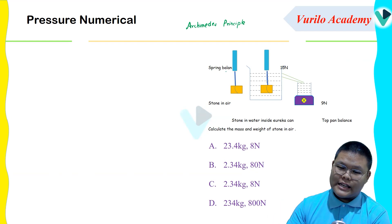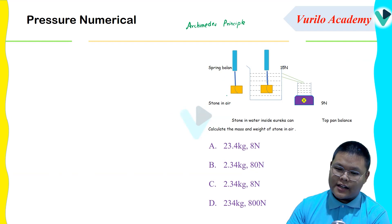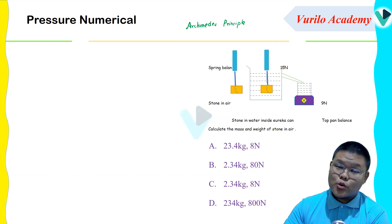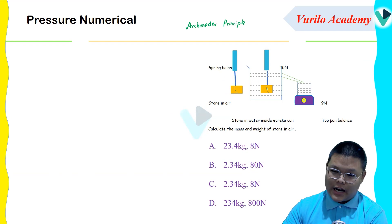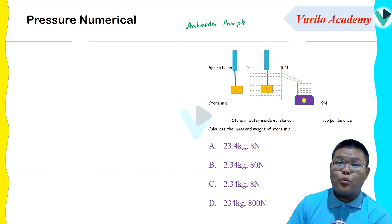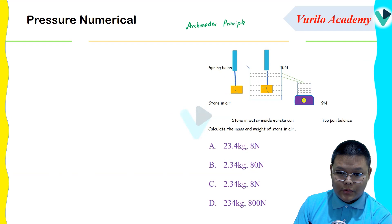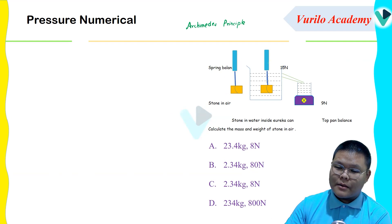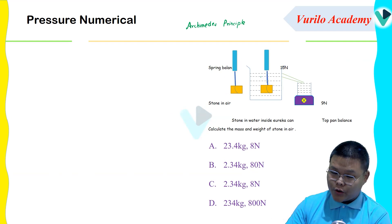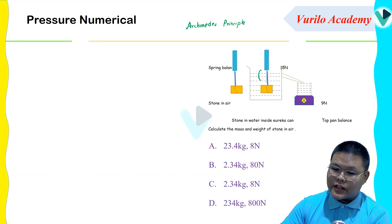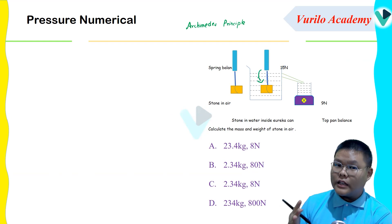Here we have a spring balance. This is a spring balance — we weigh the object using a spring balance first in air, then in a liquid.